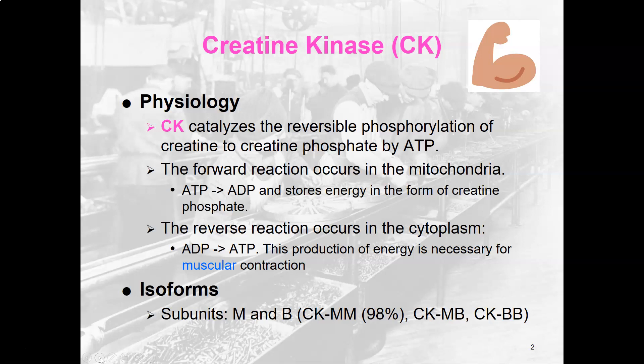The reaction can go back and forth. The forward reaction usually occurs in the mitochondria, going from ATP to ADP and storing the energy in the form of creatine phosphate. The reverse reaction occurs in the cytoplasm, where ADP is converted back to ATP. This production of energy is necessary for muscular contractions, using the phosphate from creatine phosphate and adding it to ADP to make ATP.